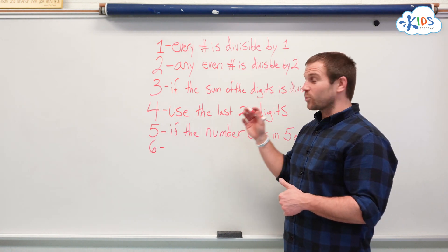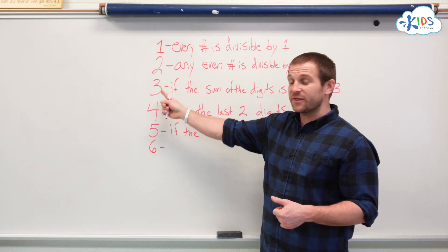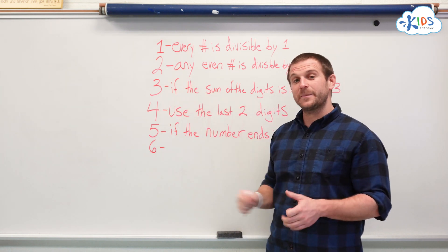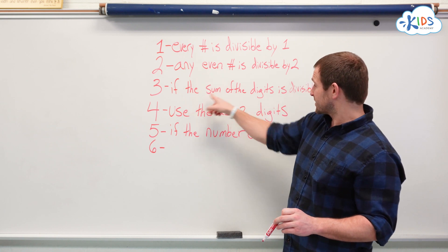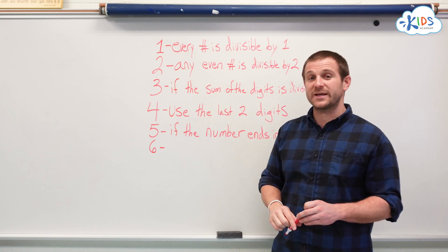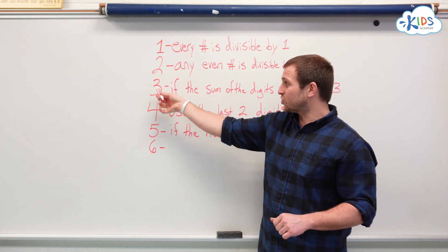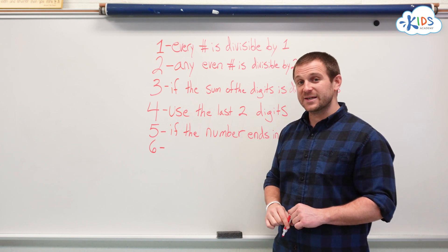For 6, we're going to introduce a combination of the original 2 rules. Because 6 is made up of 2 and 3, we just have to check to see if rule 2 and 3 apply to a number. So if a number is even and the sum of the digits is divisible by 3, then the number is also divisible by 6.